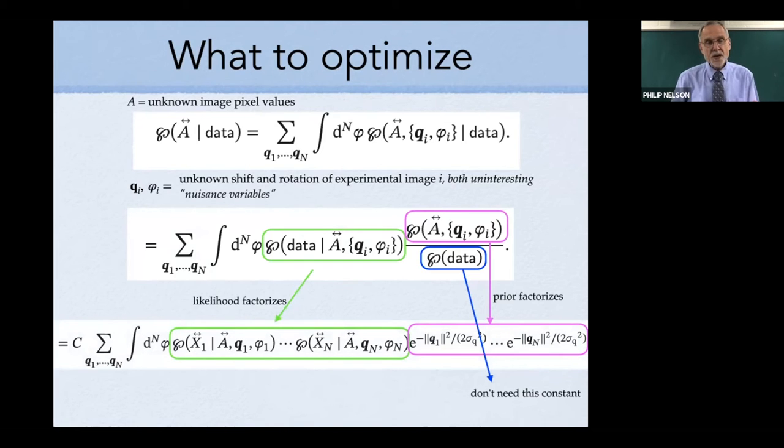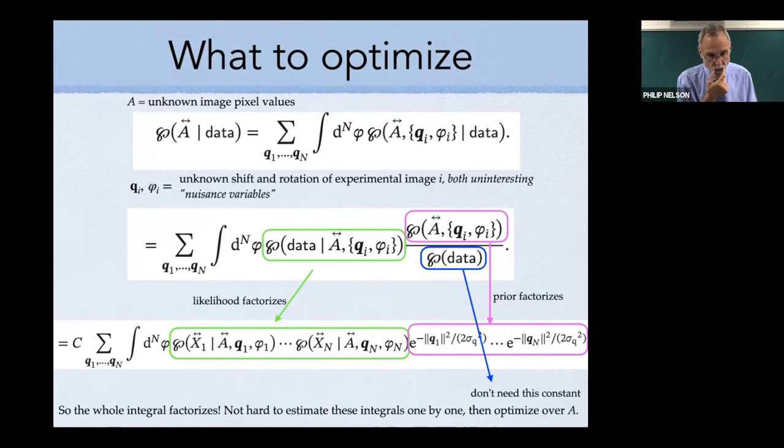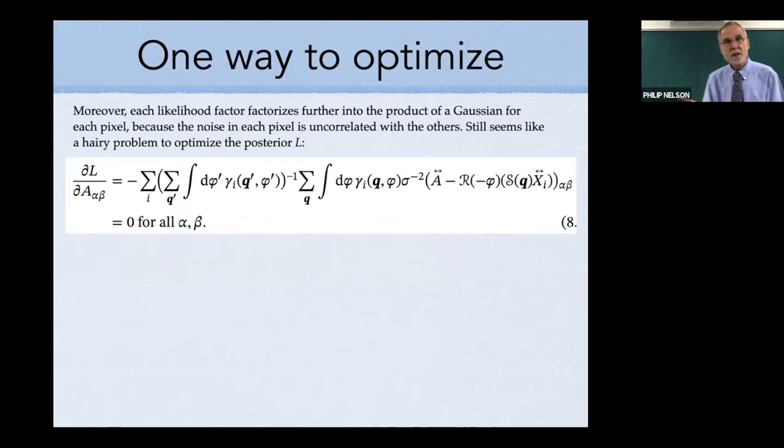Is that difficult or is that easy? It's easier than you might have thought. Each experimental realization is statistically independent of the others, so the probability factorizes into one term for each of those. Each of those factors further factorizes because the statistical noise in each pixel is independent of the others. For each pixel you take the difference between the experimental value and the shifted true image under consideration and ask what's the probability of that difference appearing in a Poisson distribution, multiplied over all the pixels. The prior also factorizes because each one has an unknown shift that's independent of the others. And the denominator we don't care about because all we're trying to do is take the argmax, find the image that maximizes this thing. That's a constant.